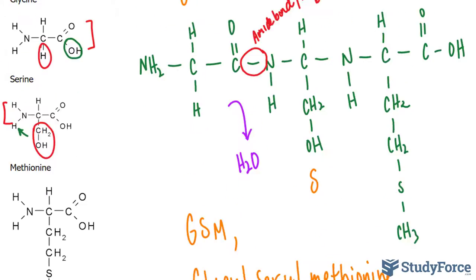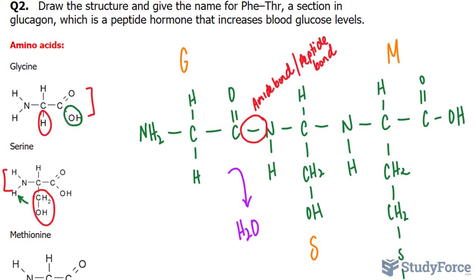One more thing before we conclude. At physiological pH, the C-terminus would lose its hydrogen, becoming negative, and that hydrogen would attach to the N-terminus. That's the answer to question number one.